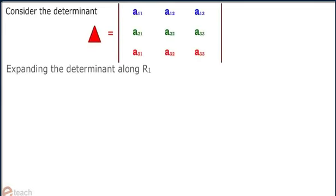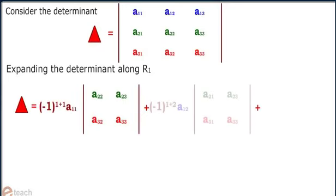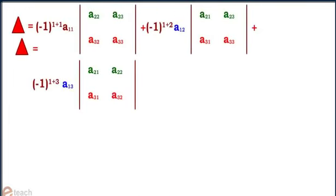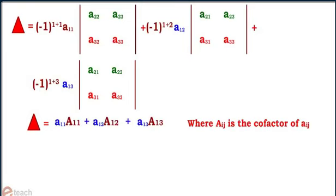On expanding the determinant along r1 and on further simplification, we get the value of the determinant equals a11 capital A11 plus a12 capital A12 plus a13 capital A13, where capital Aij is the cofactor of aij.